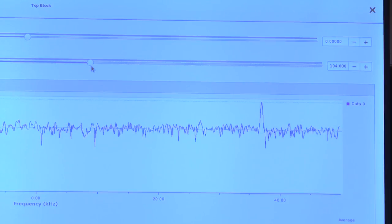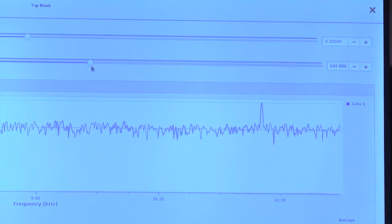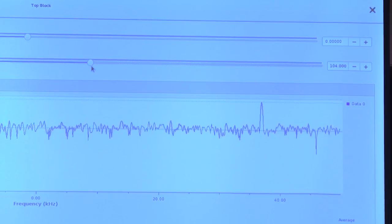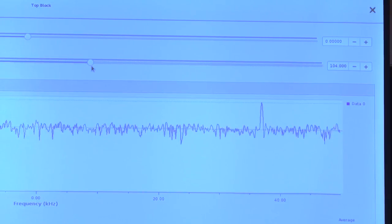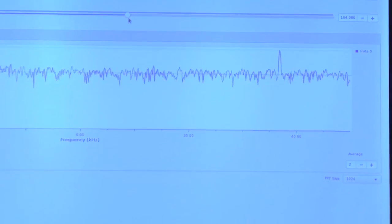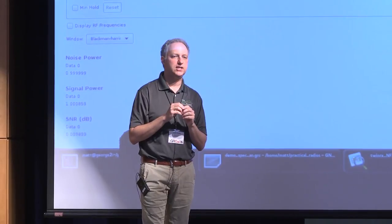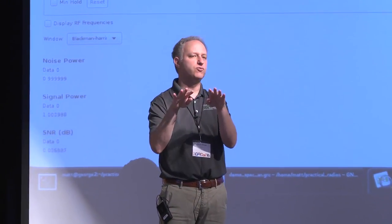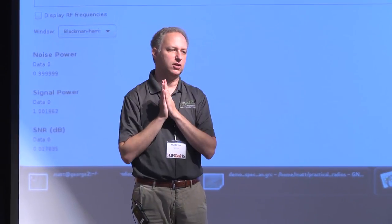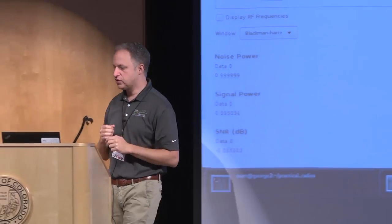But when the signals frequency gets offset a little bit, actually I may not need to turn down the averaging to see it better. But as the signals frequency moves from one bin to the next, it actually will drop on the display. And you see it drops, it's hard to tell, but it's dropping about 3 dB. And that's what is referred to as scalloping loss. So if your signal is not exactly in a bin, it will show a lower amplitude. But the power will be shown in multiple bins.